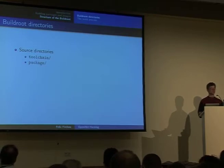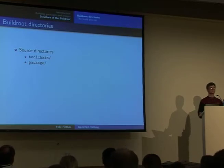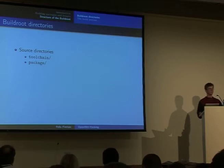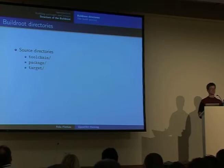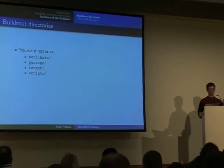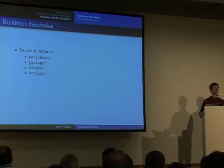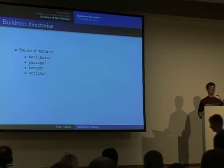Most of the time, for porting a platform this is not needed, except if it's a completely new architecture — then you may want to add a configuration for the C library there. The second source directory is package, which contains all our main packages, but not all packages — only the ones that do not depend on specific kernel tree features. If you're building a kernel module, you usually put it in the next directory which is called target.